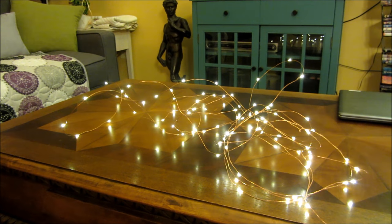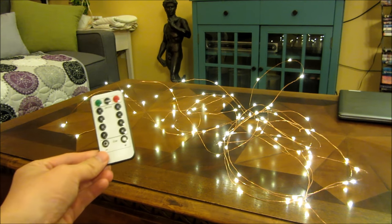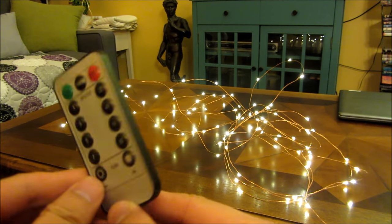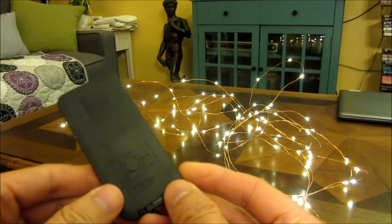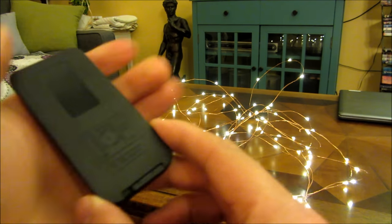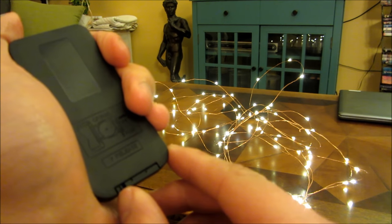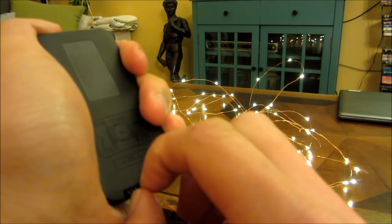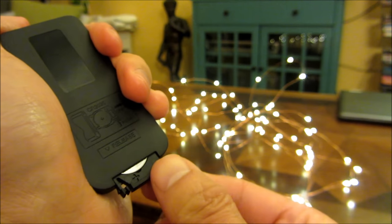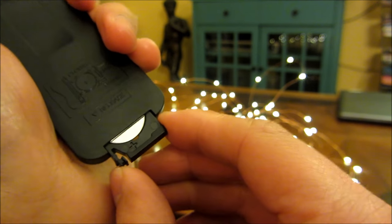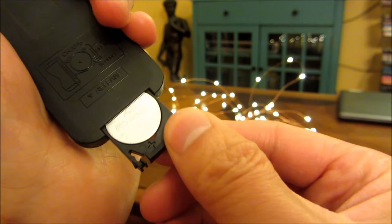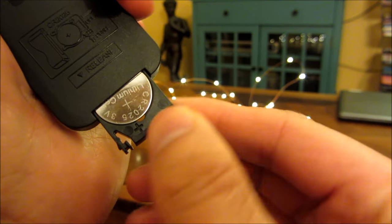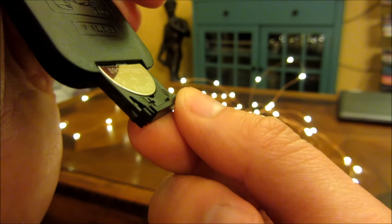And let me go ahead and unplug this and show you the plug itself. So the remote is actually pretty thin and it uses one of those coin batteries. The way to open this is to push this over to the right and pull it down. So you can see that's the mechanism for it.